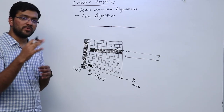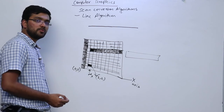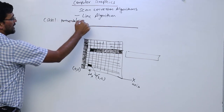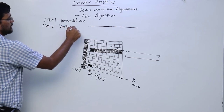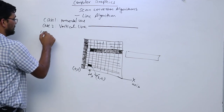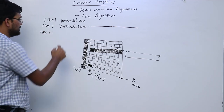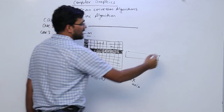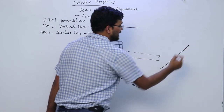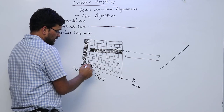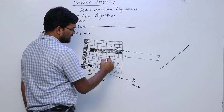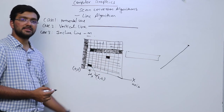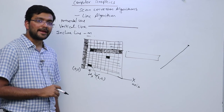That was easier — we are just moving one step in one direction. The cases we discussed were: horizontal line, and vertical line. Now let's come to the third and more complicated case, which is an inclined line with some slope m. So let's say I have to draw a line like this — this is my starting point and this is my endpoint — and now you have to draw a line. How would I do that?